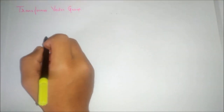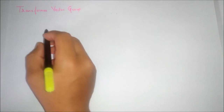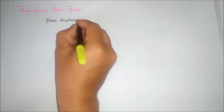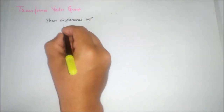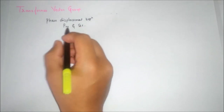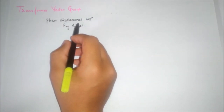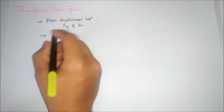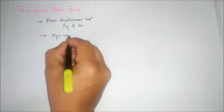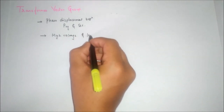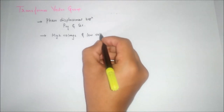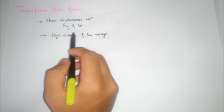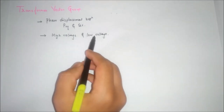What is transformer vector group? Transformer vector group shows the phase displacement between primary and secondary. Primary और secondary में जो phase displacement होगा उसका relation बताएगा, और यह high voltage कौन सा है और low voltage part कौन सा है — ये दो चीजें transformer vector group में बताएगी।